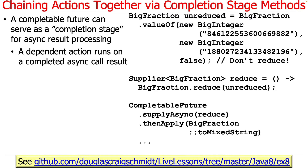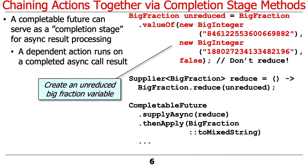We'll take a look at an example in the ex8 project in my Java 8 folder in my live lessons GitHub repository. This particular example will start out by creating an unreduced big fraction. An unreduced big fraction has the first big integer as the numerator and the second big integer as the denominator, and we pass in the value false to say don't reduce. We do this because reduction can take a while, so we might not want to run that in the calling thread.